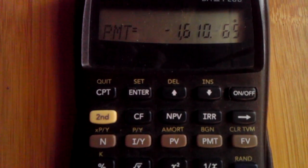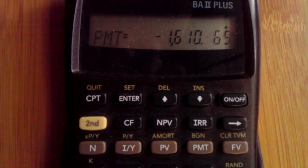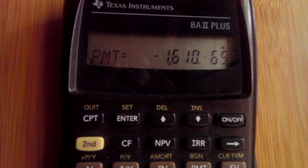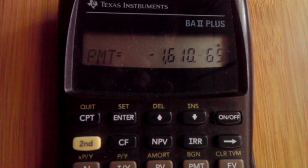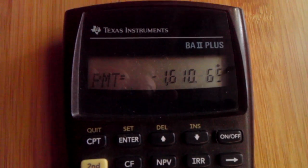So there you see sixteen hundred and ten dollars and forty-six cents. So $1610.46. That is principal and interest only.